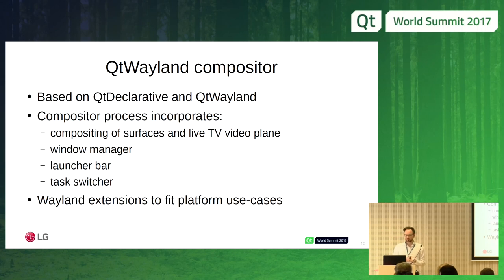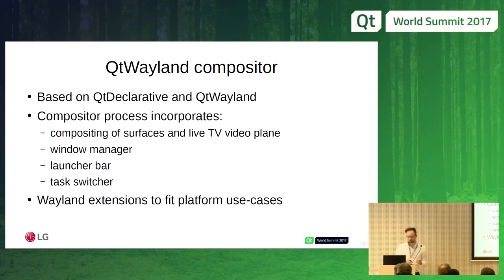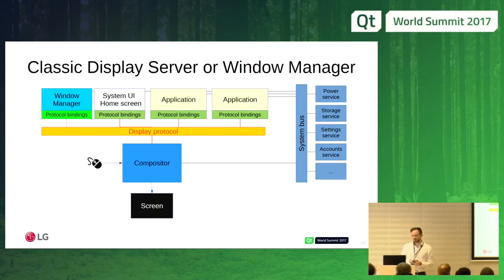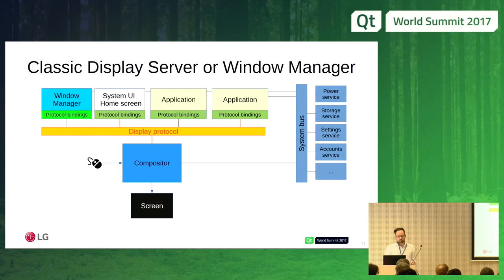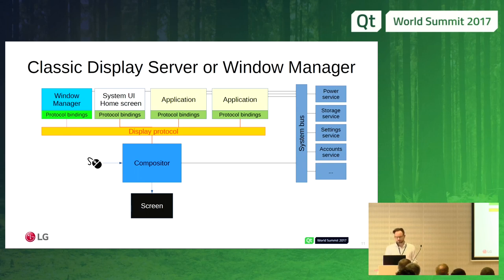We have Wayland extensions to fit special platform use cases. XDG desktop was not the right fit, so we implemented our own shell. In a classic display server anatomy — as in X11 — you have a compositor in the center, a display protocol like X11 or Wayland, and processes that talk that protocol. The window manager, applications, system UI, and home screen all connect to the compositor, which basically blends surfaces together. A system bus with different services connects all of that.